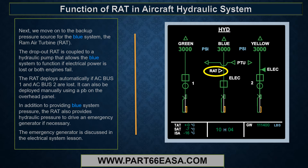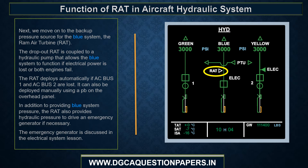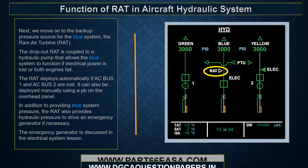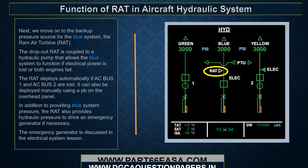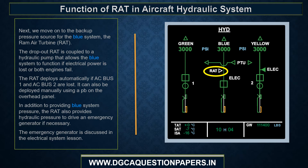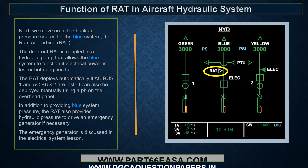The backup pressure source for the blue system is the RAT. The deployed RAT is coupled to a hydraulic pump that allows the blue system to function if electrical power is lost or both engines fail. The RAT deploys automatically if AC bus 1 and AC bus 2 are lost. It can also be deployed manually using a push button on the overhead panel. In addition to providing blue system pressure, the RAT also provides hydraulic pressure to drive an emergency generator if necessary. The emergency generator is discussed in the electrical system lesson.